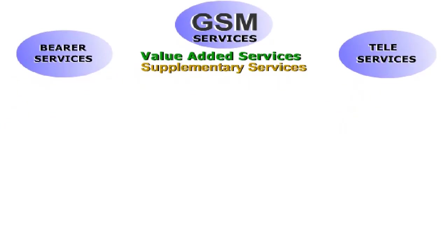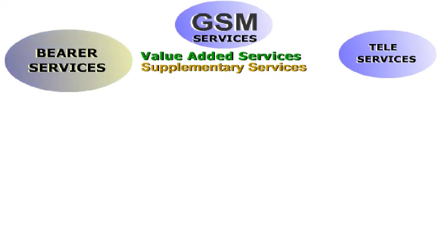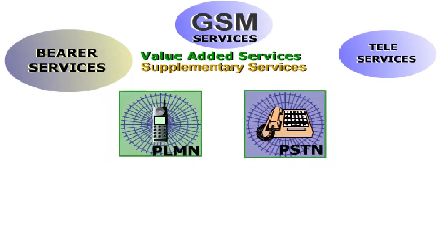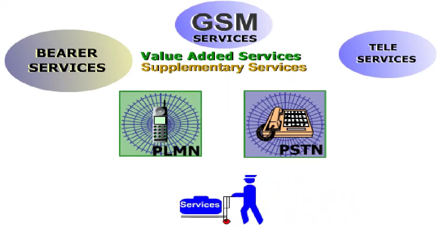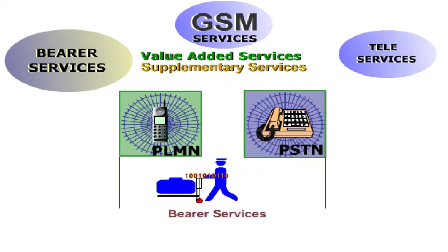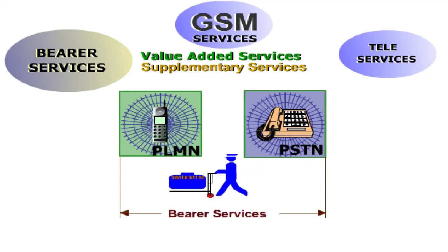Bearer services are telecommunication services that guarantee the transmission of signals between access points in telecommunication networks. They are used exclusively for transport and define the services a network can offer. For example, data transmission between a corporate network and a mobile notebook, or data download from the web.